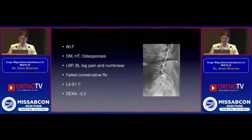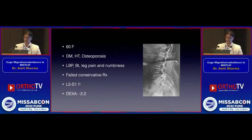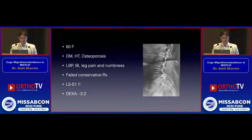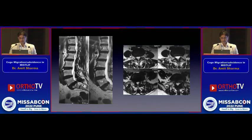There is always concern about whether you should put a cage of bigger size or smaller size, and how to make sure it doesn't come out. We had this case: a 60-year-old female, diabetic, hypertensive, osteoporotic, with a DEXA score of minus 2.2. MRI showed L5-S1 disc pathology with significant bilateral radiculopathy.